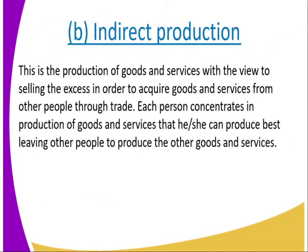Number two: we look at indirect production. This is the production of goods and services with a view to selling the excess in order to acquire goods and services from other people through trade. Each person concentrates on producing goods and services that he or she can produce best, leaving other people to produce other goods and services.